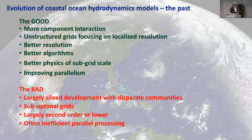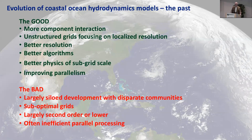There's been enormous progress since these models have been developed. Where we've been going is much more component interaction between the silos. Unstructured grids are great — you can really resolve things where you need to, with localized resolution over large domains. As computer capacity grows, we get better resolution together with better algorithms. Models today are a lot less numerically diffusive than in the past, with better subgrid scale physics and improving parallelism.